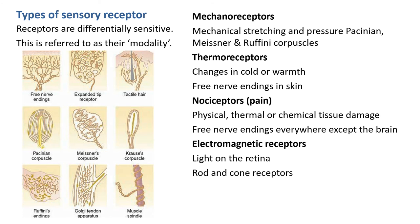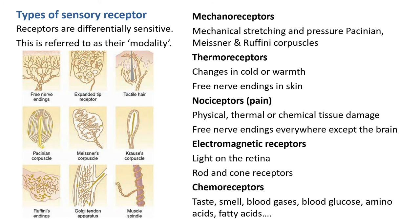We also have electromagnetic receptors - these detect light falling onto the retina; these are rod and cone receptors. And chemoreceptors, which operate in the afferent branch of the autonomic nervous system. They detect taste, smell, blood gases, blood glucose, amino acids, fatty acids, and hormones. When we talked about chemoreceptors in the hypothalamus, we discussed them as chemically gated channels where a hormone would bind and stimulate the receptor.